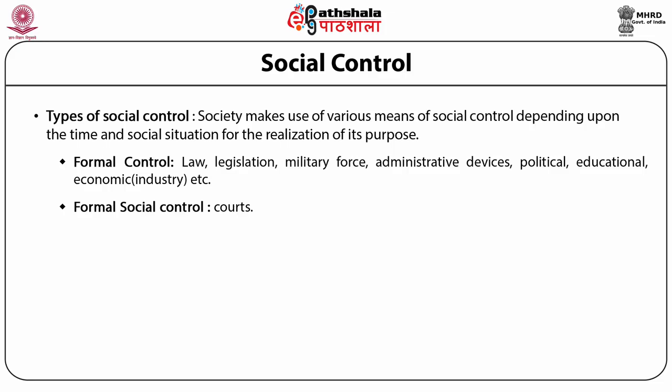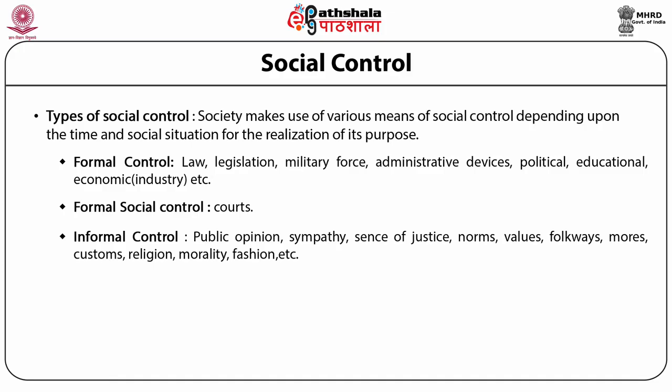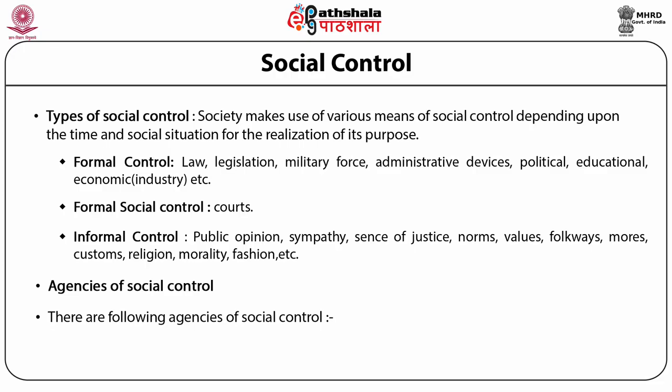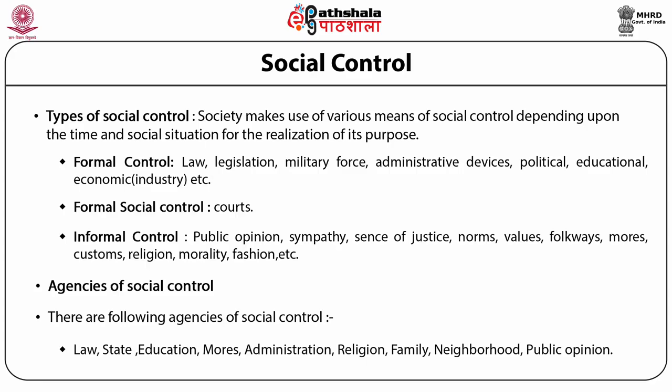Unauthorized use of force constitutes crime, rebellion, or revolution. State systems emphasize punishment to avoid threats to the legitimacy of political and legal authority, whereas some small-scale societies emphasize re-establishing harmony. Informal control includes public opinion, sympathy, sense of justice, norms, values, folkways, mores, customs, religion, morality, fashion, etc. The agencies of social control include law, state, education, folkways, mores, administration, religion, family, neighborhood, and public opinion.